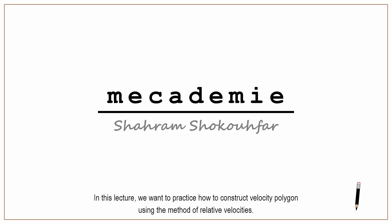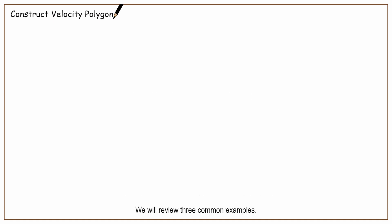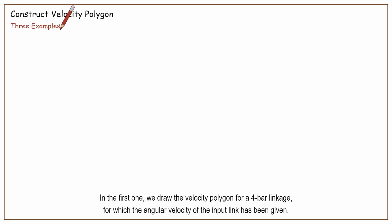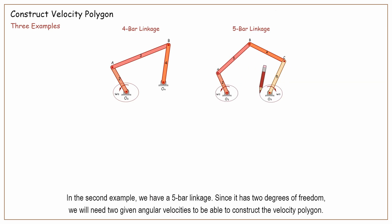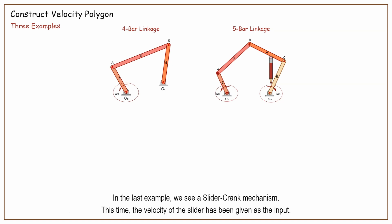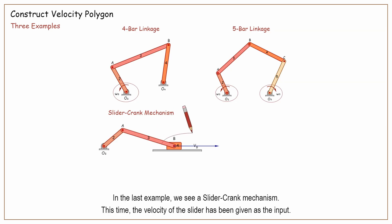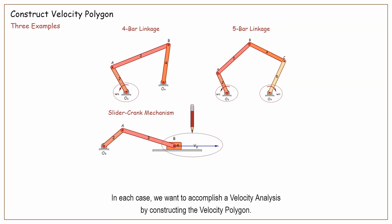In this lecture, we want to practice how to construct velocity polygons using the method of relative velocities. We will review three common examples. In the first one, we draw the velocity polygon for a 4-bar linkage, for which the angular velocity of the input link has been given. In the second example, we have a 5-bar linkage. Since it has 2 degrees of freedom, we will need two given angular velocities to construct the velocity polygon. In the last example, we see a slider crank mechanism, where the velocity of the slider has been given as the input. In each case, we want to accomplish a velocity analysis by constructing the velocity polygon.